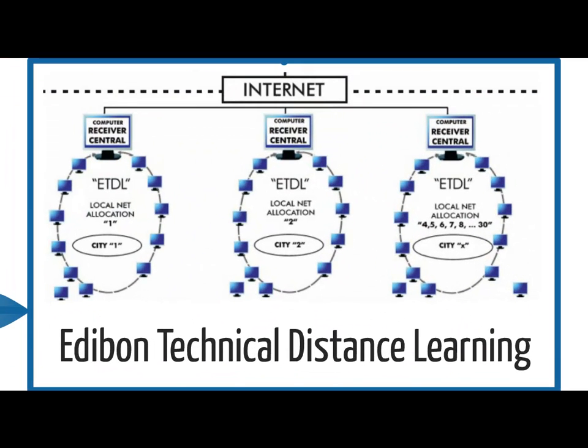ETDL, Edibon Technical Distant Learning, is an addition to the Escata Net. It has an additional central receiver computer in another location connected to the instructor's computer via the internet. This central receiver computer can be connected to another local network of users.